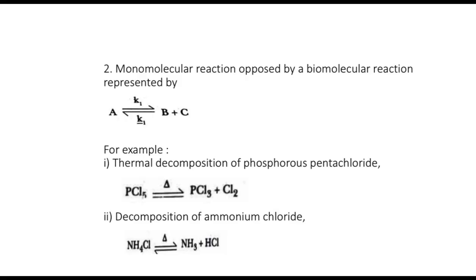In the reverse reaction, PCl3 and Cl2 recombine resulting in the formation of the original reactant PCl5. Similarly, decomposition of ammonium chloride results in one molecule each of ammonia and hydrogen chloride, which in the reverse reaction recombine to give the original ammonium chloride.